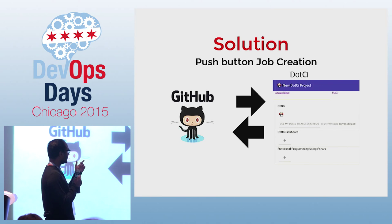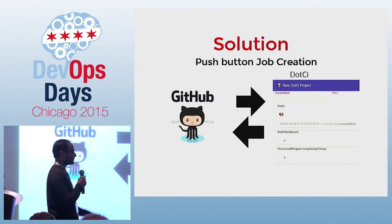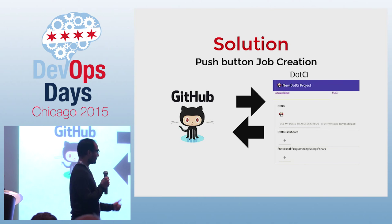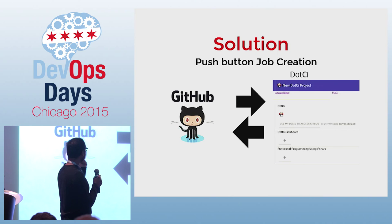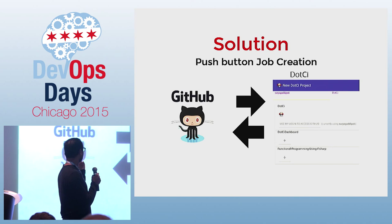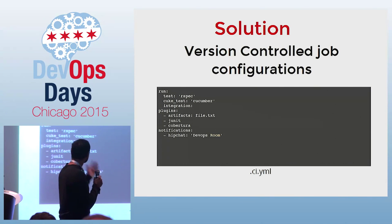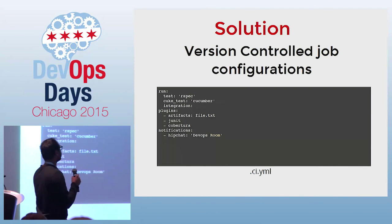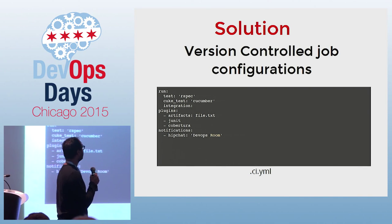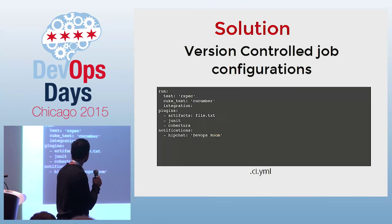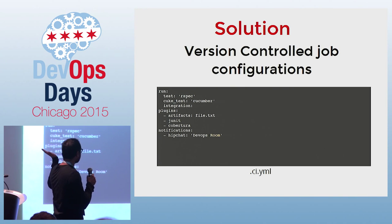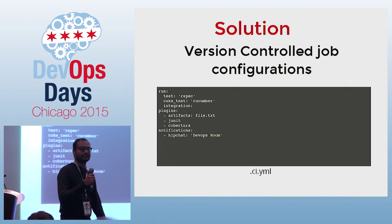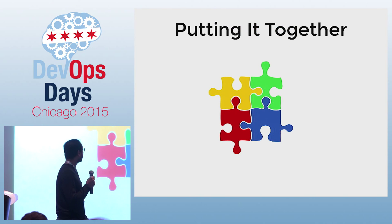Push button job creation. This is a plugin called .CI, which is a Jenkins plugin that we use. It hooks up with GitHub and sets up GitHub hooks. And this is an example of a .ci.yml file that devs check in at the root of their repo with all the job configurations, so you get the advantages of version control.